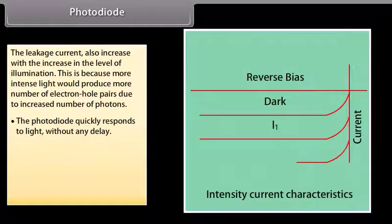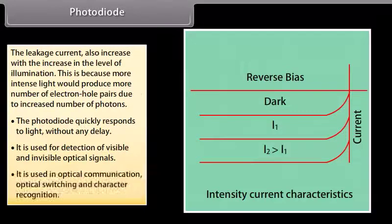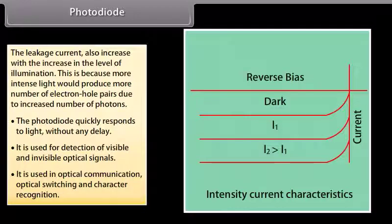The photodiode quickly responds to light without any delay. It is used for detection of visible and invisible optical signals, optical communication, optical switching, and character recognition.